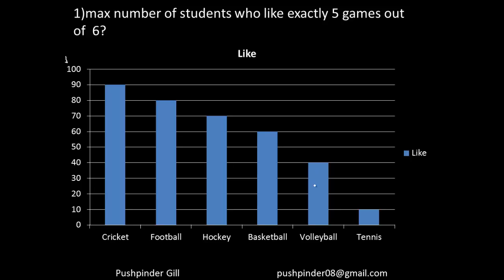Let me start with the 40 people who like volleyball — call them group number 1. The same 40 people like basketball as well, the same 40 like hockey, the same 40 like football, and the same 40 like cricket. So these 40 people like exactly 5 games: cricket, football, hockey, basketball, and volleyball. I got my answer as 40 for group 1.